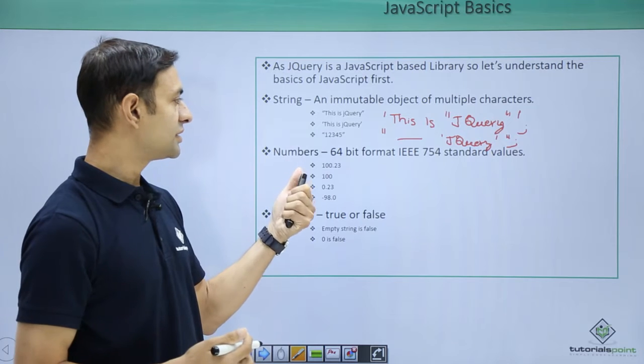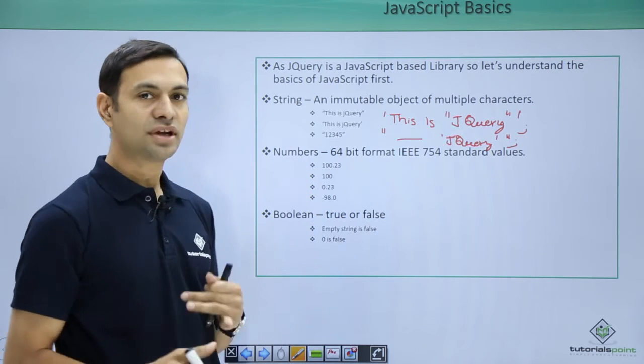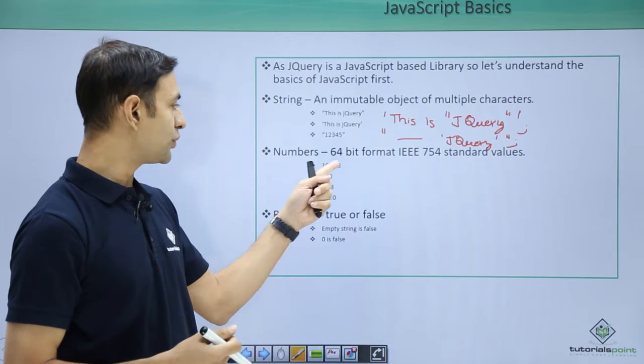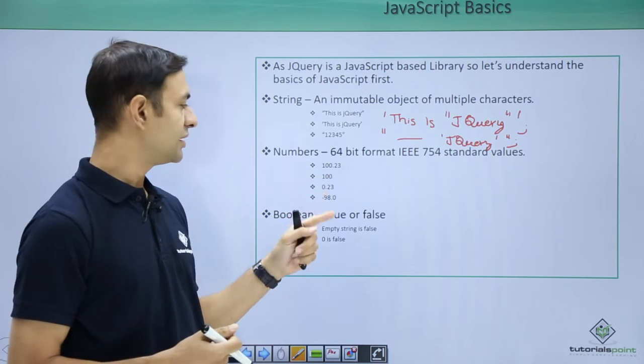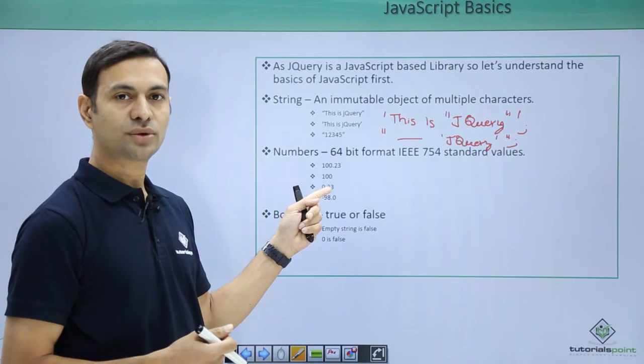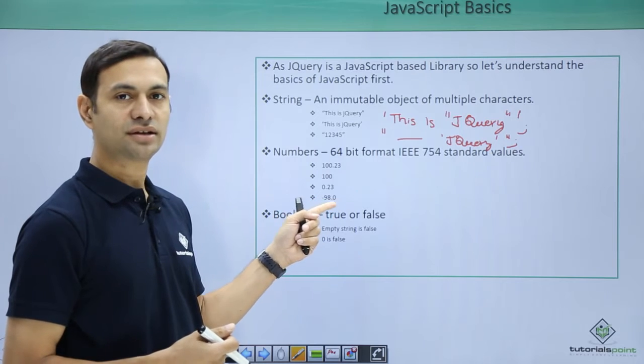Then numbers. JavaScript supports decimal numbers of high precision. Here we have used positive numbers with decimal digits - we have numbers, we have 0.23, we have negative numbers as well.